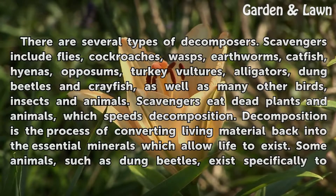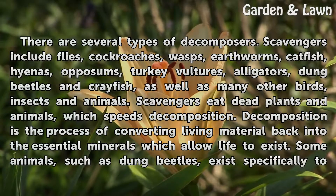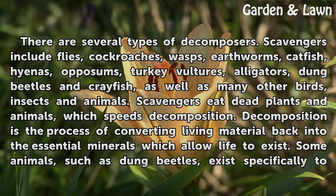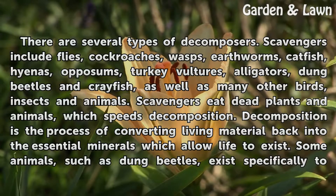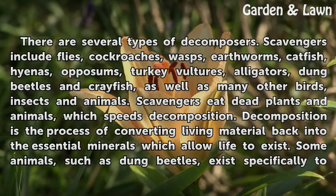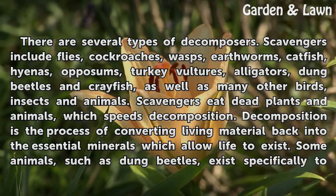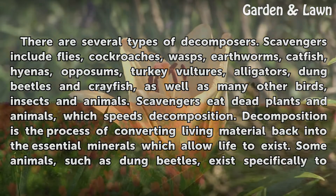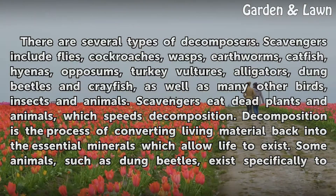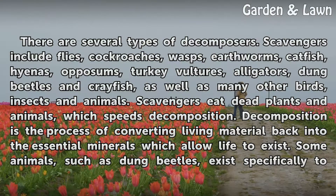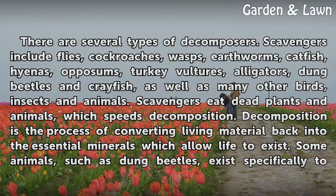There are several types of decomposers. Scavengers include flies, cockroaches, wasps, earthworms, catfish, hyenas, opossums, turkey vultures, alligators, dung beetles, and crayfish, as well as many other birds, insects, and animals. Scavengers eat dead plants and animals, which speeds decomposition.